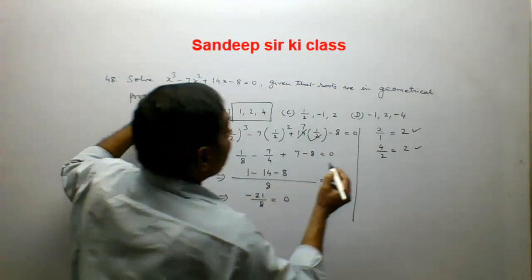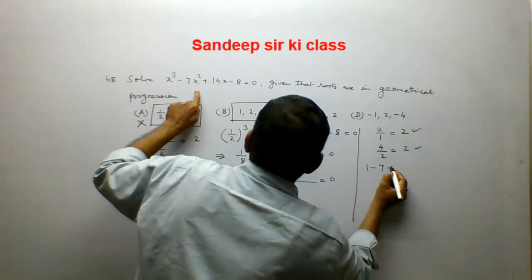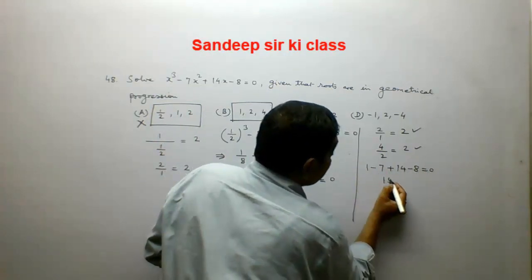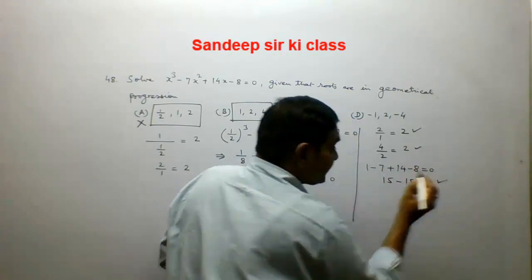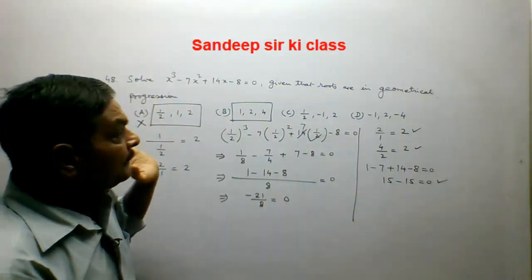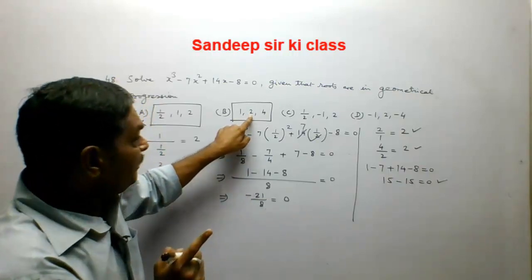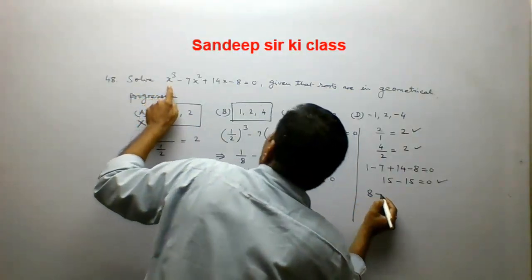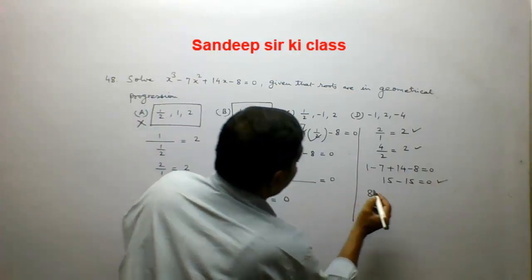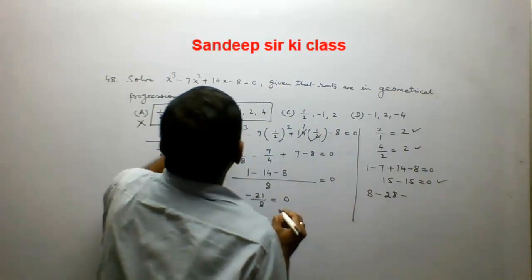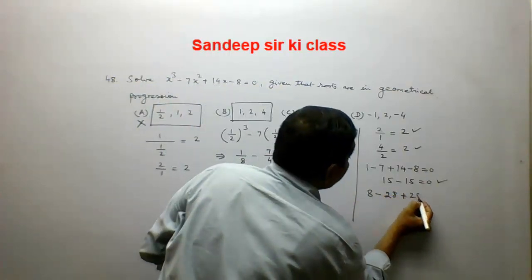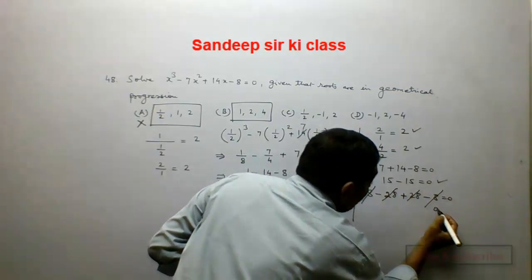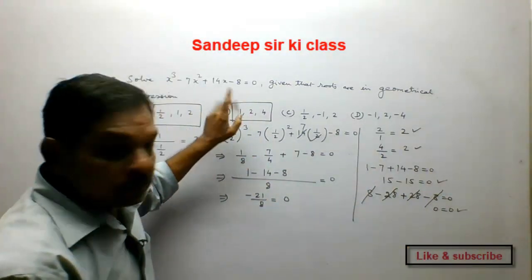We put x = 1: 1 minus 7 plus 14 minus 8 equals 0. That is 15 minus 15 equals 0 — satisfied. Then x = 2: 8 minus 28 plus 28 minus 8 equals 0 — satisfied. So both 1 and 2 satisfy the given equation.